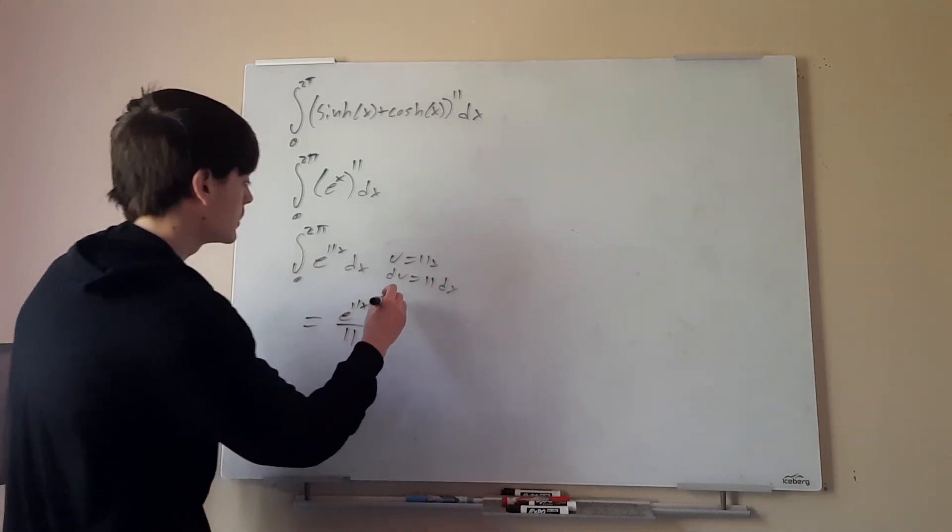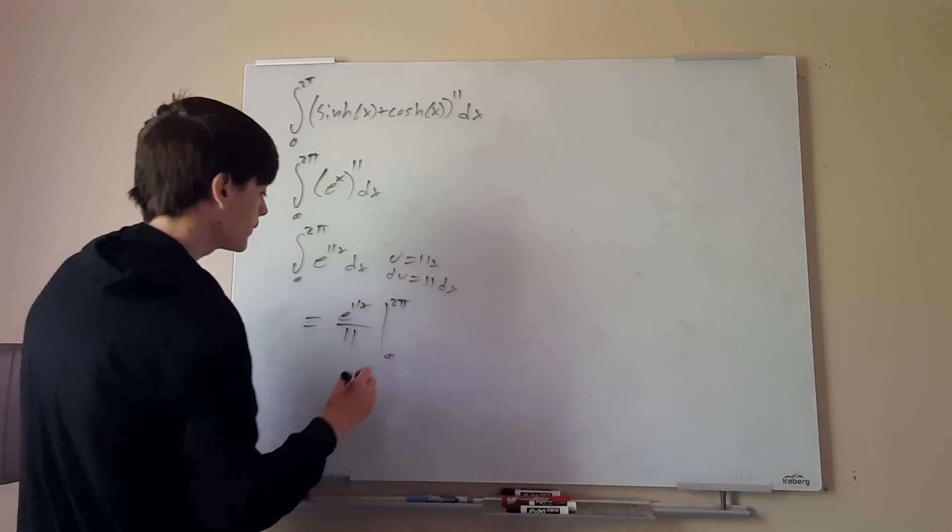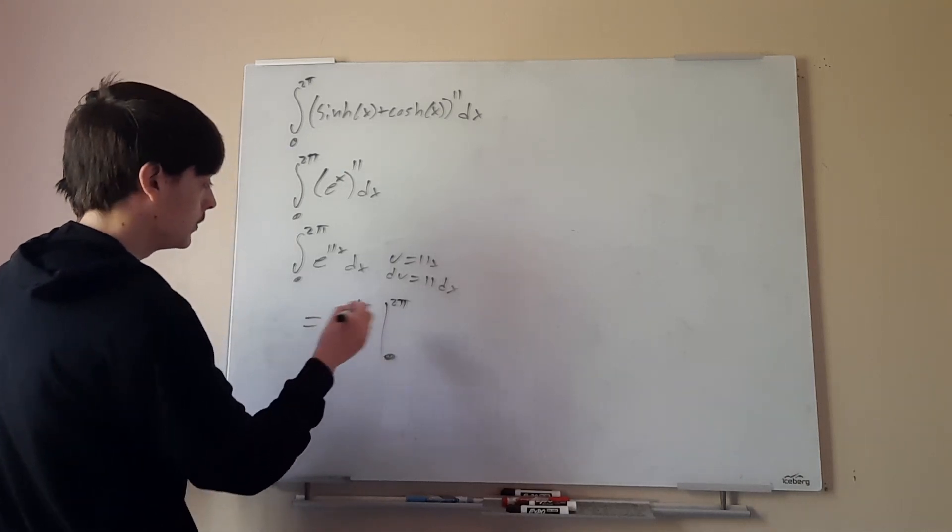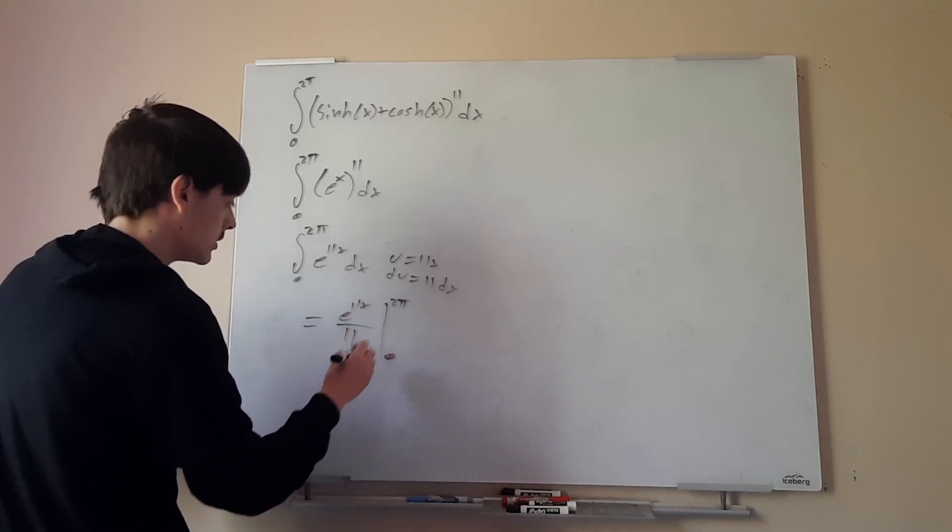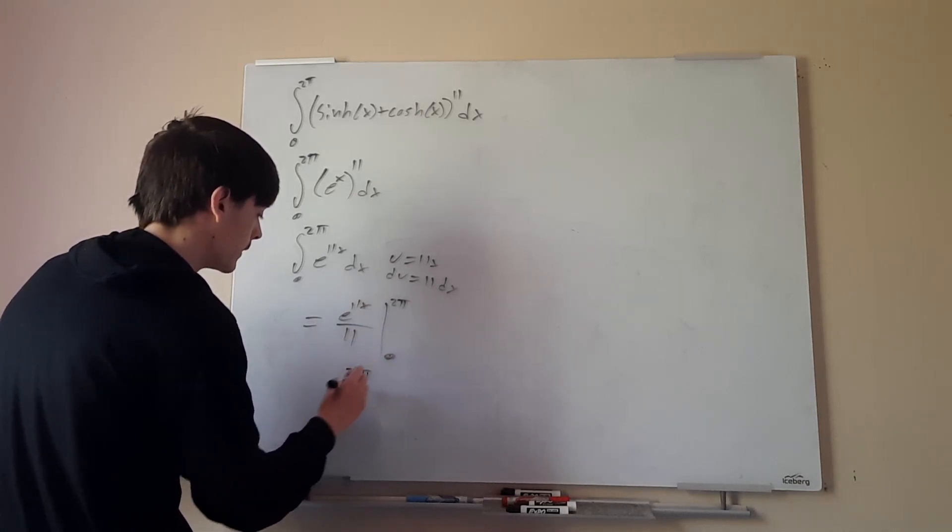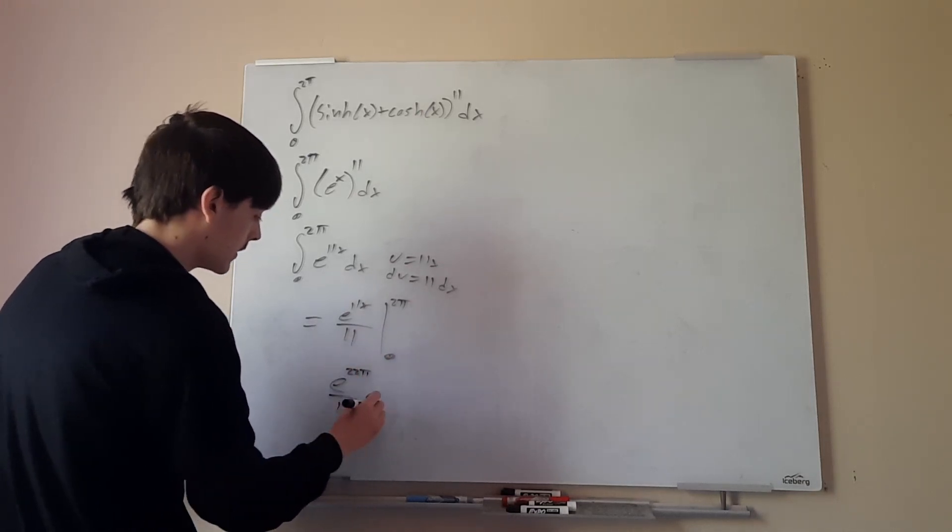And then we just got to plug in our bounds, 2π and 0. Now be careful here. So plug in 2π, that's easy. e^(11 × 2π), that will be e^(22π)/11. And this is where we have to be careful.